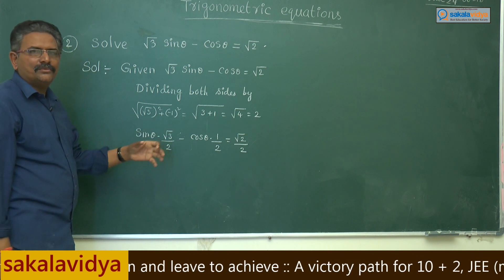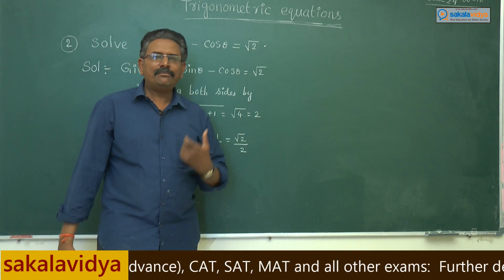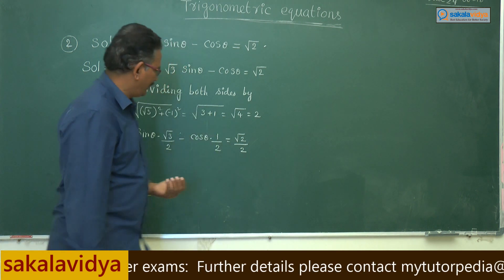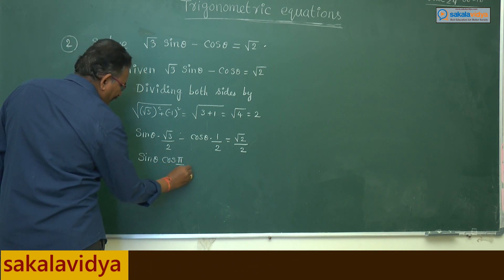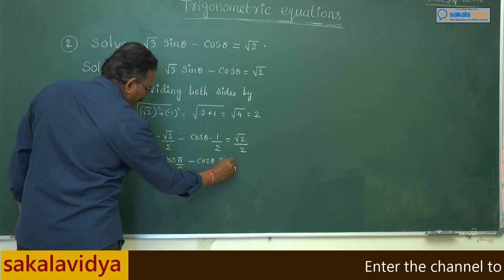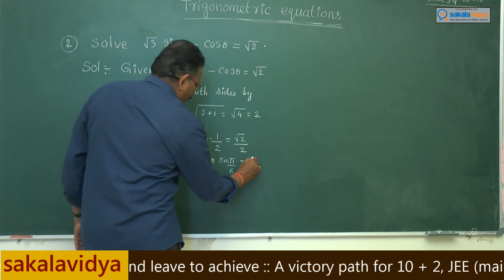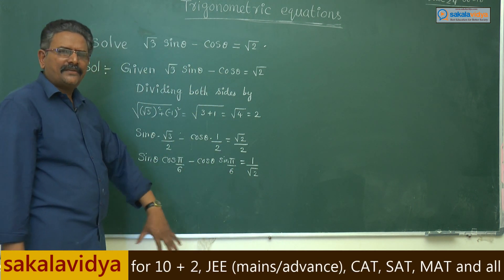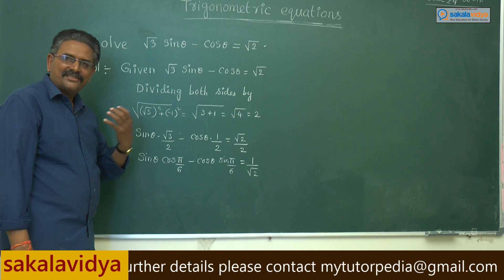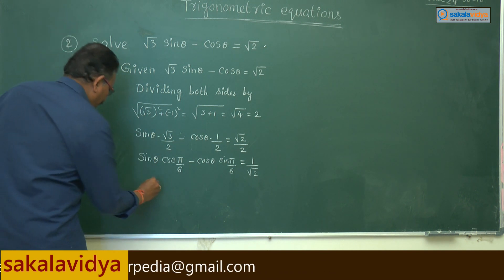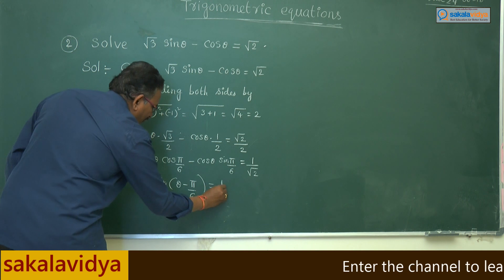Here, root 3 by 2 is equivalent to cos 30° (π/6), and 1 by 2 is equivalent to sin 30° (π/6). So this can be written as sin θ · cos(π/6) minus cos θ · sin(π/6), which equals 1 by root 2. The left-hand side is in the form of sin A cos B - cos A sin B, which is nothing but sin(A - B). So this can be written as sin(θ - π/6) = 1/√2.